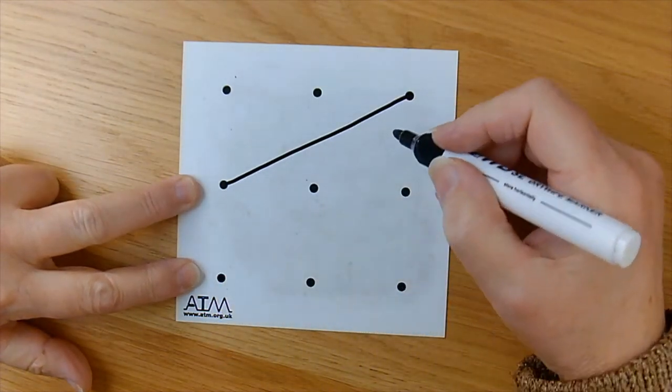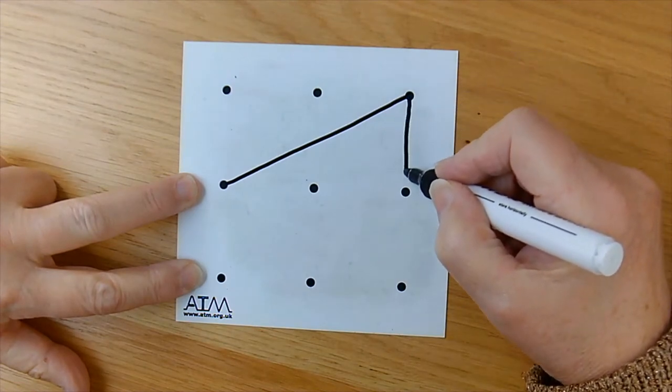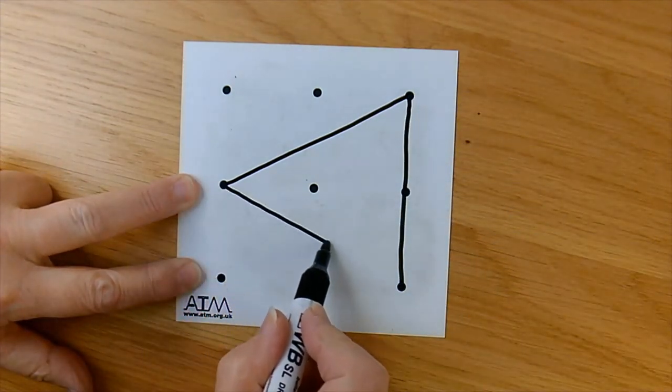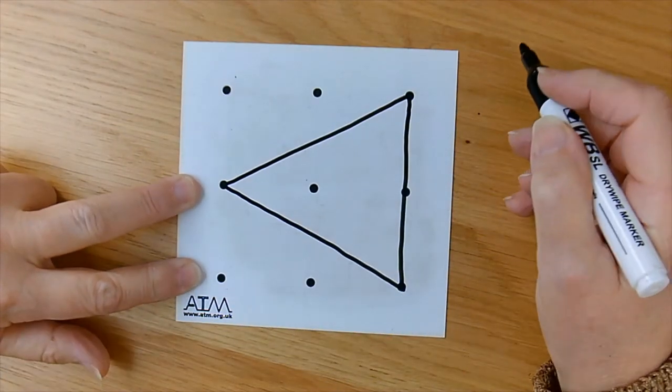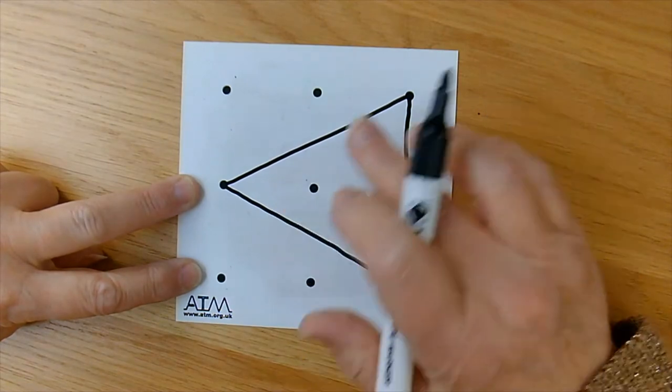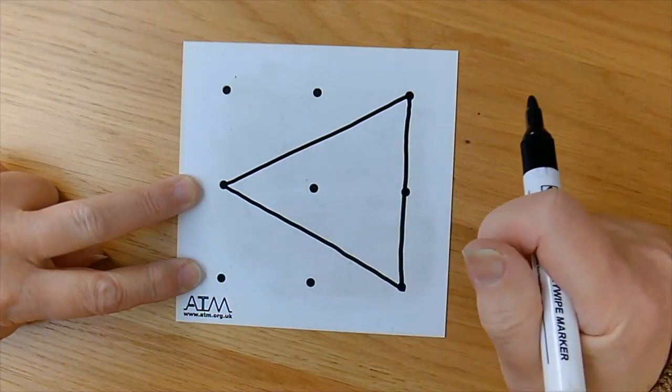So I'm going to draw a shape on my pinboard. You'll see that there's an isosceles triangle. I'm now going to redraw that isosceles triangle in a different position on the pinboard.